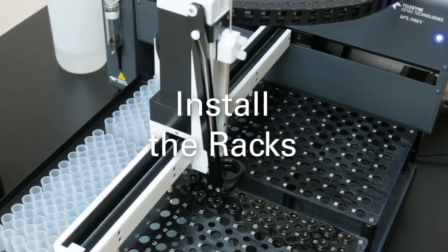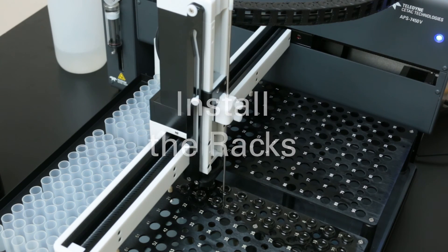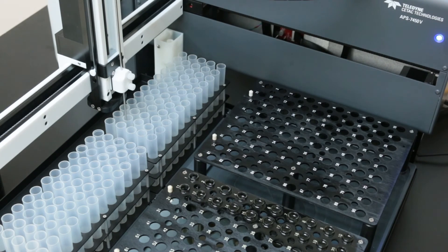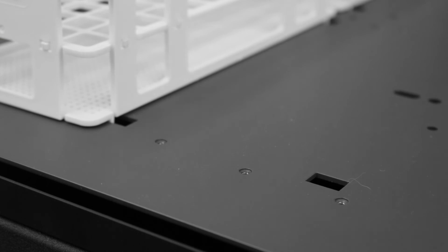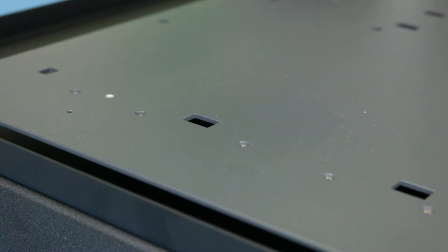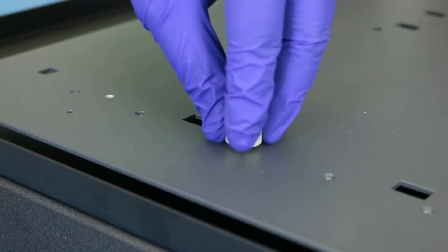Install the racks. You'll always need at least two racks: one rack for sample tubes and another rack for dilution tubes. Some racks have legs or pins which fit into holes in the tray. Other racks are held in place by pins which you need to install in the tray.